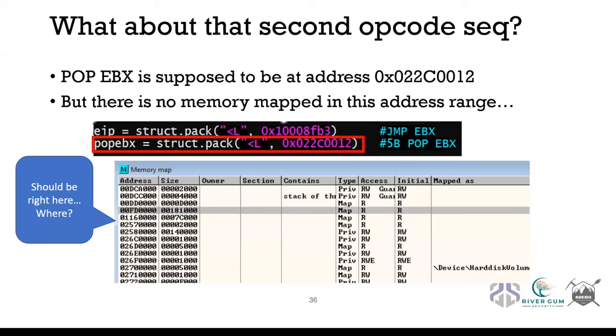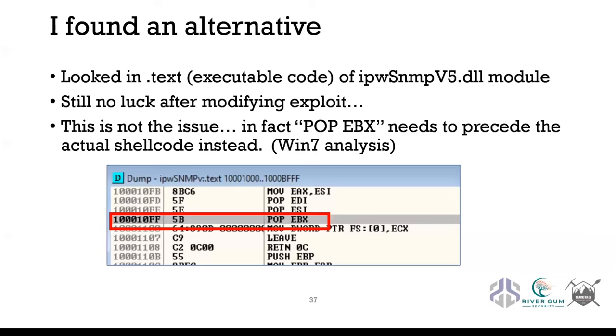The second opcode sequence was 'pop ebx', supposed to be at address 0x022C0012. On a Windows 10 system, that memory page was not even mapped — I couldn't see it. This turns out to be the very reason this exploit won't work on Windows 10, plus some padding problems. I looked for it, couldn't find it, tried modifying the memory address, but could not get it to work. It turns out pop ebx is the very first opcode that needs to precede the actual shellcode.